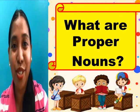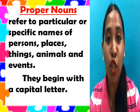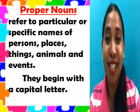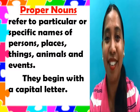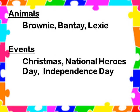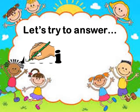What are proper nouns? Proper nouns refer to particular or specific names of persons, places, things, animals, and events. They begin with a capital letter. Particular name of persons like John, Mark, Cherry. Particular name of places like Trinidad, Cebu, Tagbilaran City. Particular name of things like Mongol, Samsung, Yamaha. Specific name of animals like Brownie, Bantai, Lexi. Specific name of events like Christmas, National Heroes Day, Independence Day. Did you understand about noun?